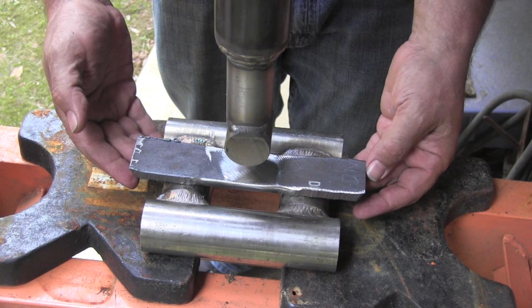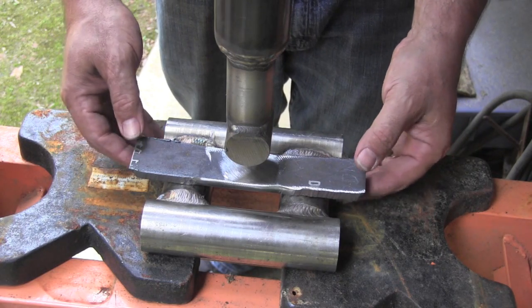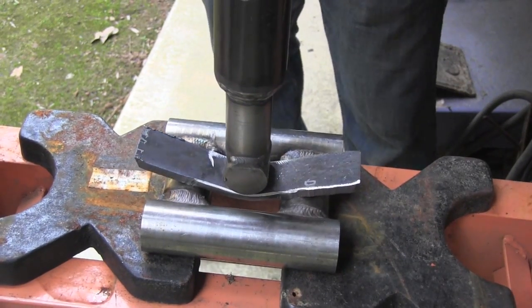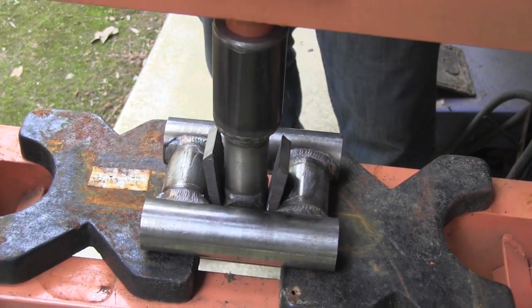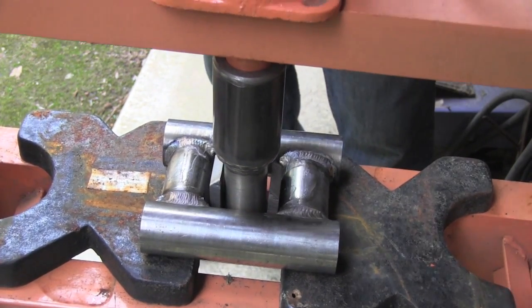But I kind of wanted to weld down toward the low range just to show that a weld that looked okay wasn't always okay, and show the difference between CO2 and argon CO2.